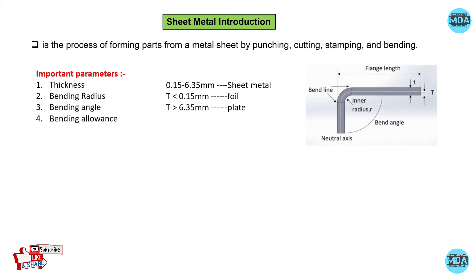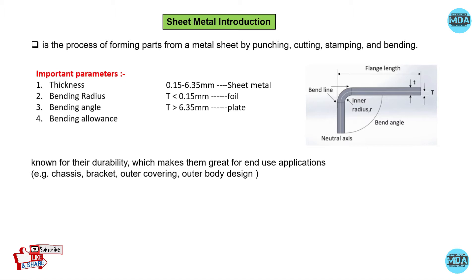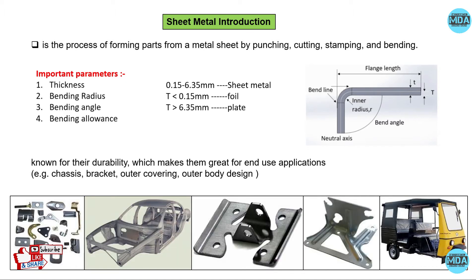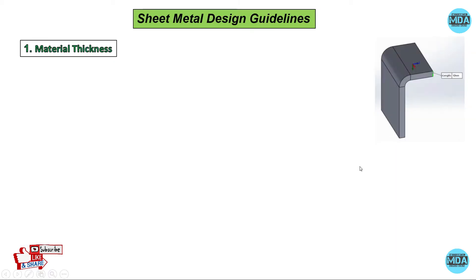Sheet metal components are known for their durability, which makes them great for end-use applications. Sheet metal components are used in chassis design, bracket design, outer covering design, and outer body design. These are some applications where sheet metal components are widely used in industry.